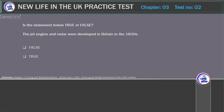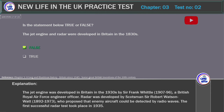Is the statement below true or false? The jet engine and radar were developed in Britain in the 1830s. Correct answer: False. Explanation: The jet engine was developed in Britain in the 1930s by Sir Frank Whittle (1907–96), a British Royal Air Force engineer officer. Radar was developed by Scotsman Sir Robert Watson-Watt (1892–1973), who proposed that enemy aircraft could be detected by radio waves. The first successful radar test took place in 1935.